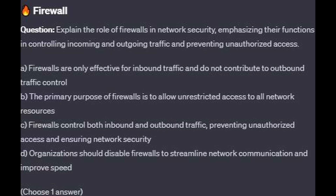Question 7: Explain the role of firewalls in network security, emphasizing their functions in controlling incoming and outgoing traffic and preventing unauthorized access. Is it A: firewalls are only effective for inbound traffic and do not contribute to outbound traffic control? Is it B: the primary purpose of firewalls is to allow unrestricted access to all network resources? Is it C: firewalls control both inbound and outbound traffic, preventing unauthorized access and ensuring network security? Or is it D: organizations should disable firewalls to streamline network communication and improve speed?